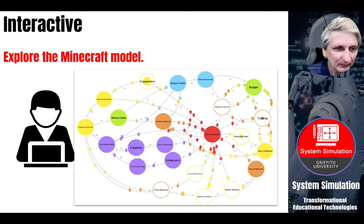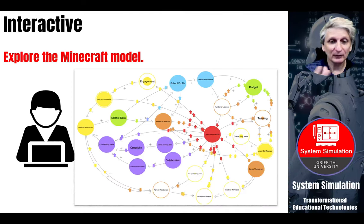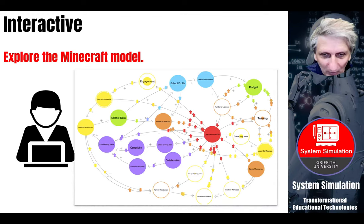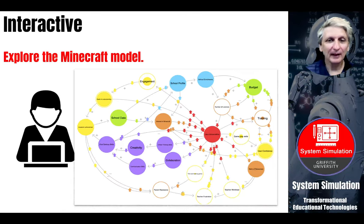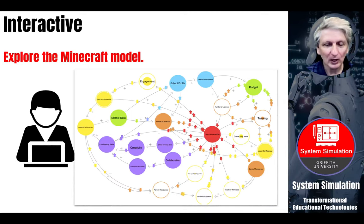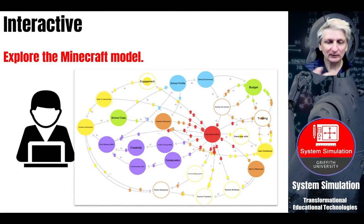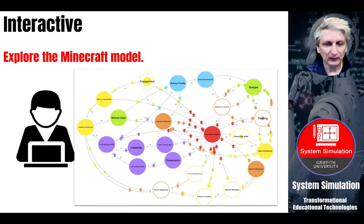We can see things around parental resistance, where there is a double line coming into that, which is increasing its effect. Likewise, a double line around teacher workloads. So the degree of impact has been shown in Loopy through the use of these double lines. Whereas in more complex simulations, we would give numerical weightings to our links, and that would be an indicator of the strength of impact of those various connections.